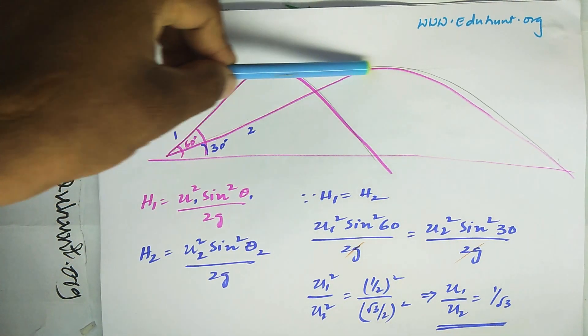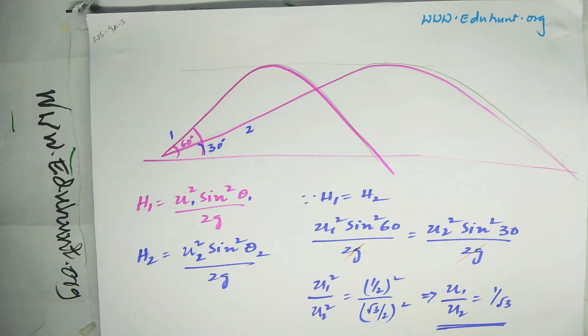If both bodies attain the same height, he is asking us to find the ratio of their initial velocities. Here, what is the hint?